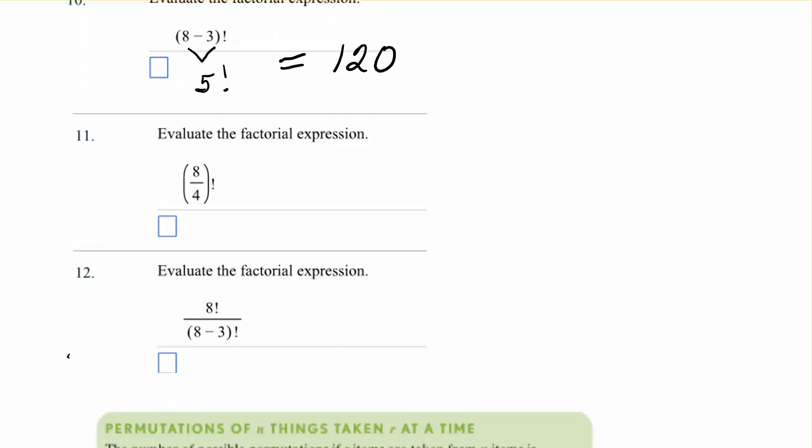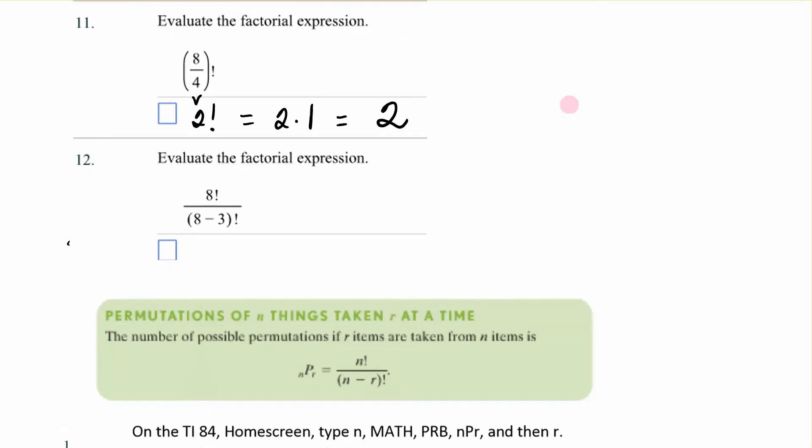Number 11. 8 divided by 4. If I do what's in the parentheses, I get 2. And 2 factorial is 2 times 1, which is 2. And that's much easier than using the calculator at all.